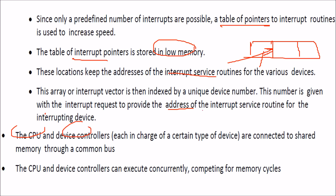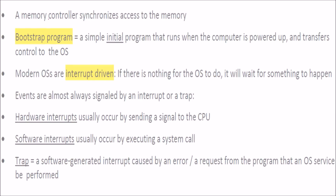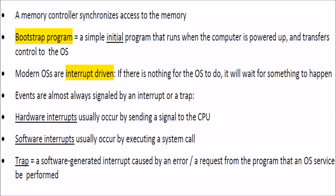The CPU and device controller are connected to shared memory via a common bus, and they can execute concurrently, competing for memory cycles. A memory controller synchronizes access to memory. Modern operating systems are all interrupt-driven — if the OS needs to know about something, an interrupt must arrive.